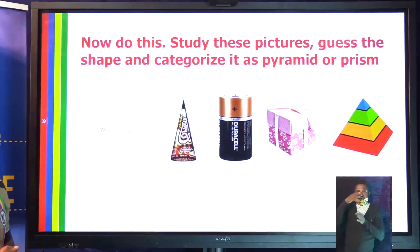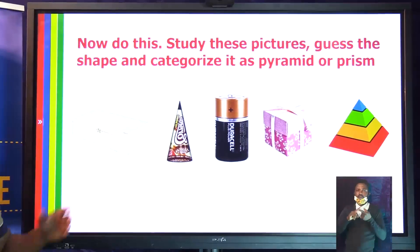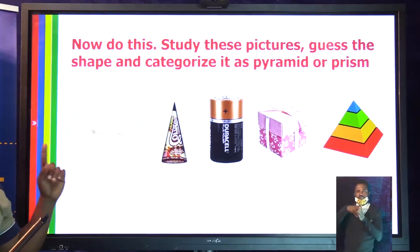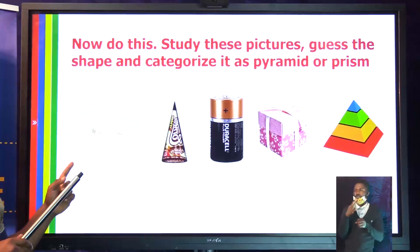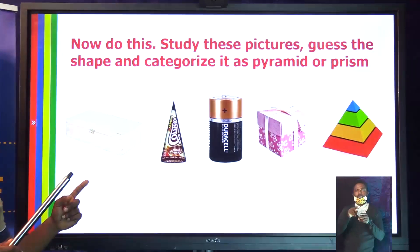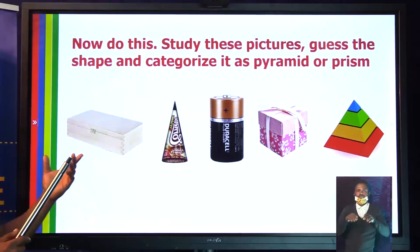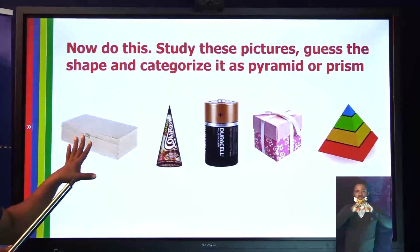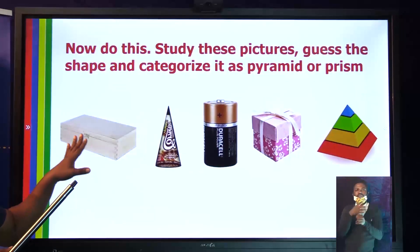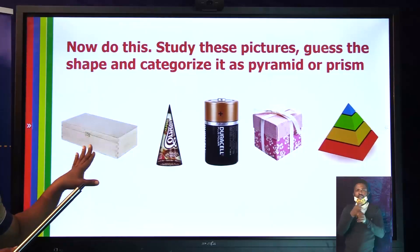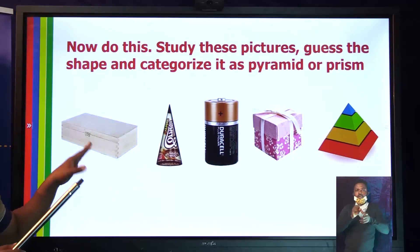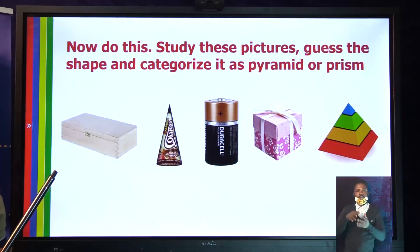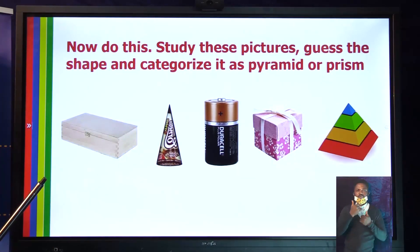I've said a lot today and I believe you have learned a lot. I want to check how well you have learned. Look at these shapes — they are in the shape of some pyramids or prisms we have discussed. I want you to categorise them: is it a pyramid or a prism, and what type? Study these five and categorise them. You have 30 seconds — begin.